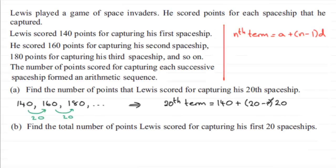Now in part b, we've got to find the total number of points that Lewis scored for capturing his first 20 spaceships. We've got to add all of these values up that would be in this sequence. You should be familiar with the quick way of doing this.